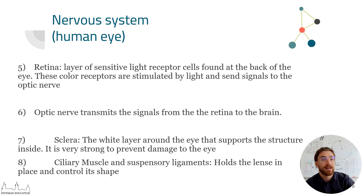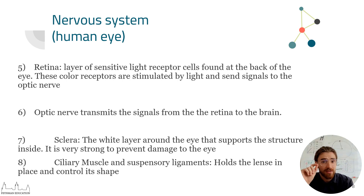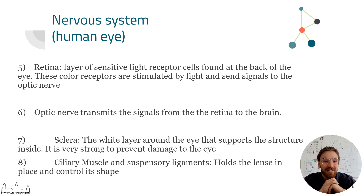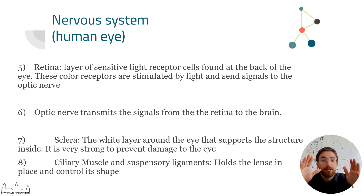Other parts of the eye not in direct contact with light include the sclera — the white layer around the eye — which is tough and there to protect the inner workings of the eye. The sclera also protects the ciliary muscles, which contract or relax to allow the lens to focus on far-away objects or close-up objects.